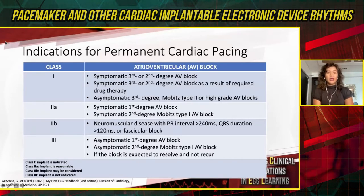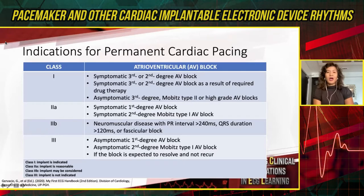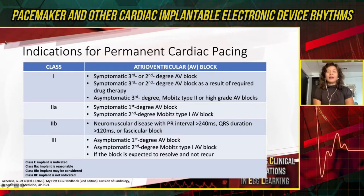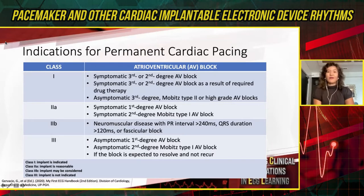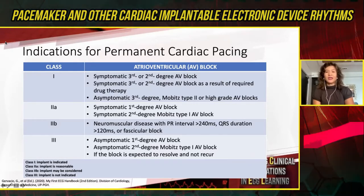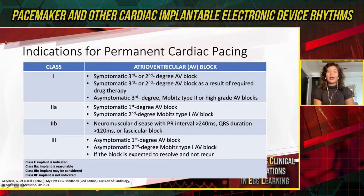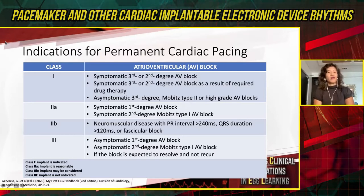The second general indication commonly encountered is atrioventricular blocks, or AV blocks. Class one indication includes symptomatic third- or second-degree AV block, symptomatic third- or second-degree AV block resulting from essential drug therapy, and asymptomatic third-degree, Mobitz type 2, or high-grade AV block. Class 2A includes symptomatic first- or second-degree Mobitz type 1 AV block, whereas class three would include asymptomatic first- or second-degree Mobitz type 1 AV block, or reversible AV block.